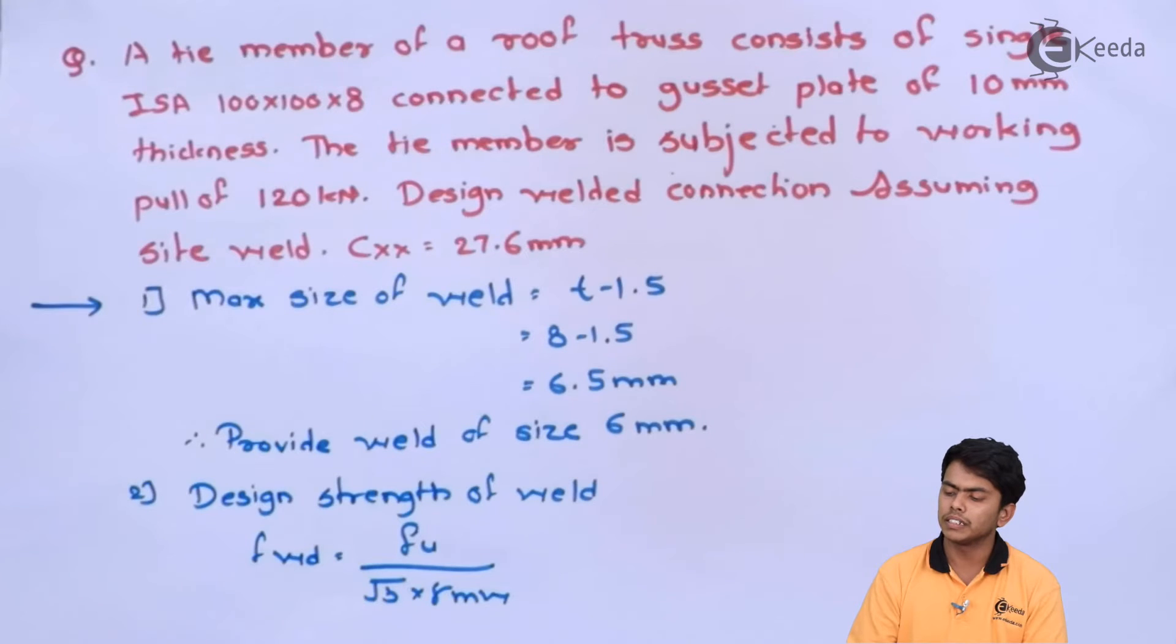Take C axis is equal to 27.6 mm. A tie member of roof truss with a single ISA connected, size 100 x 100 x 8, connected with a gusset plate of thickness 10 mm, subjected to working pull. If we have a working load, then we will convert it into factored load when we solve it. Design welded connection, site weld, CXX central order distance which is 27.6 mm.